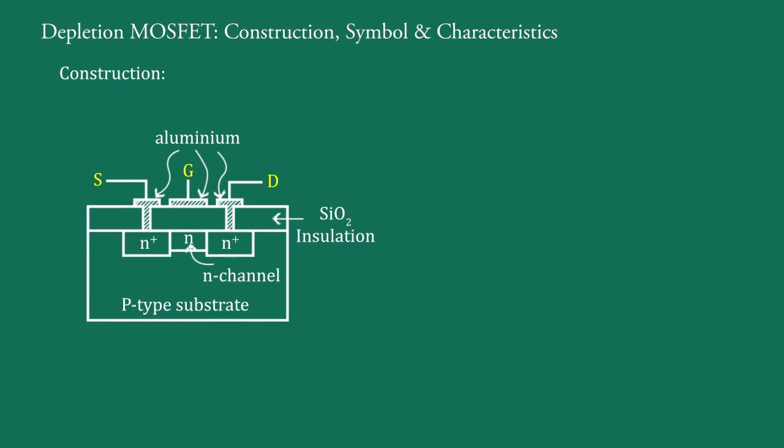It consists of a lightly doped P-type substrate into which two heavily doped N+ regions are diffused. These two N+ regions act as source and drain and they are separated about one millimeter by a lightly doped N channel.